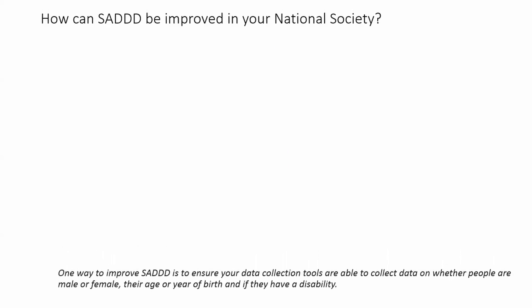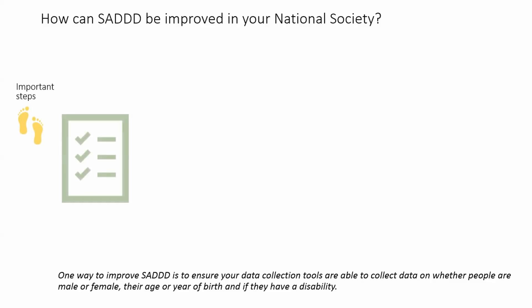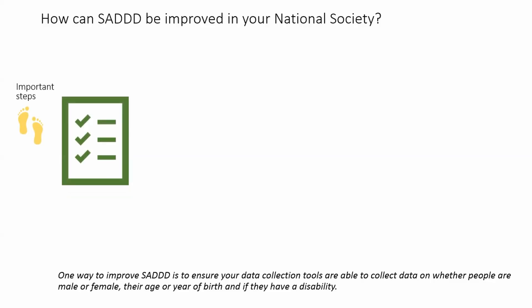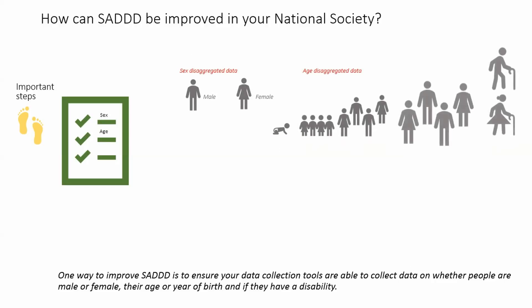One way to improve SAD is to ensure your data collection tools are able to collect data on whether people are male or female, their age or year of birth, and if they have a disability.